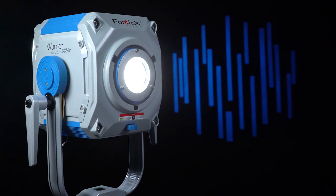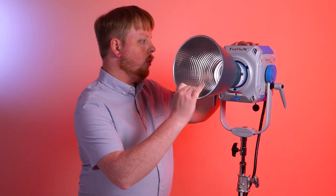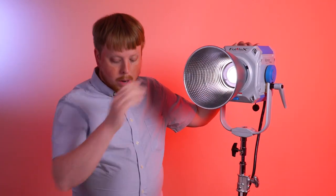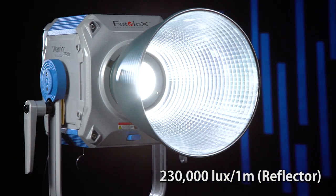Without a reflector, the light measures 18,830 lux at one meter. And if you add the included reflector, which we'll do right now on the light's Bowens mount, it measures 230,000 lux at one meter.